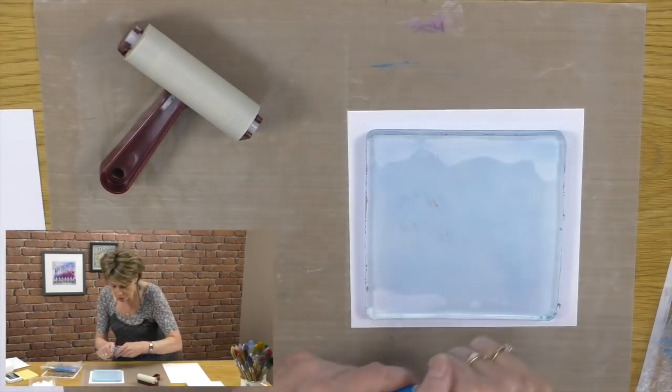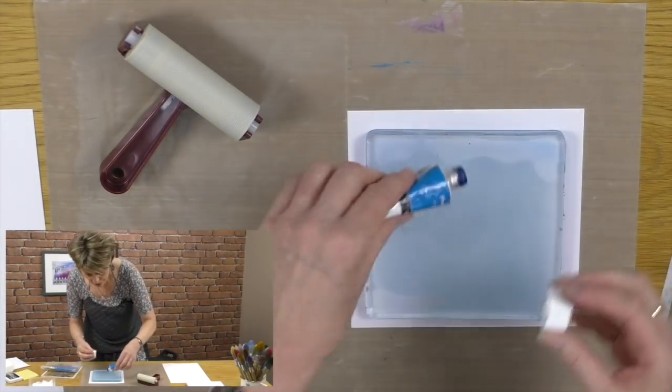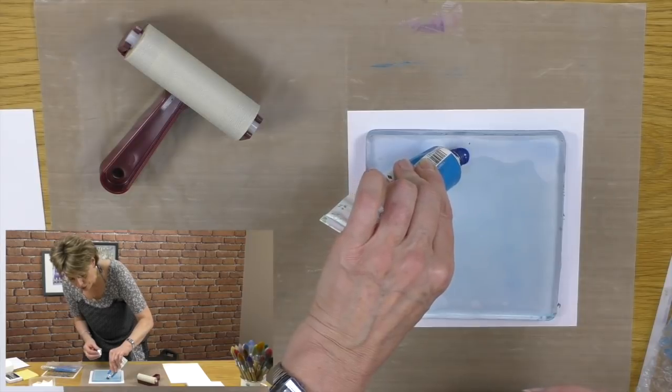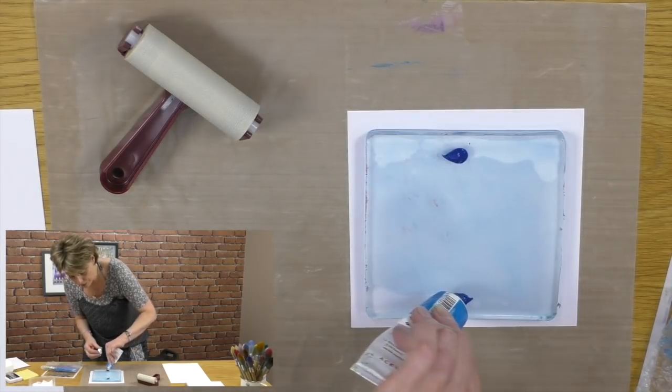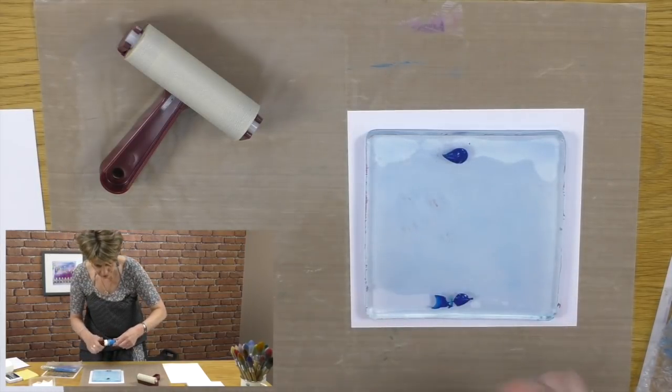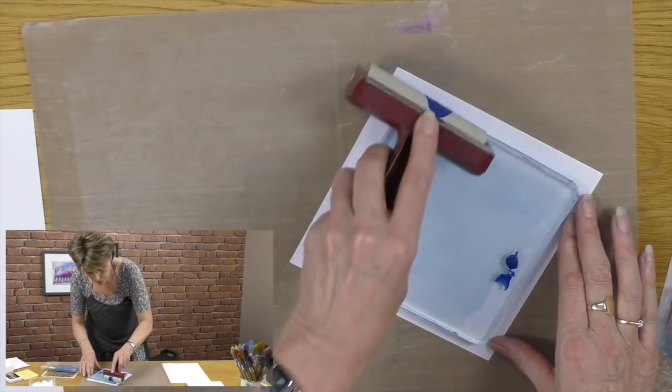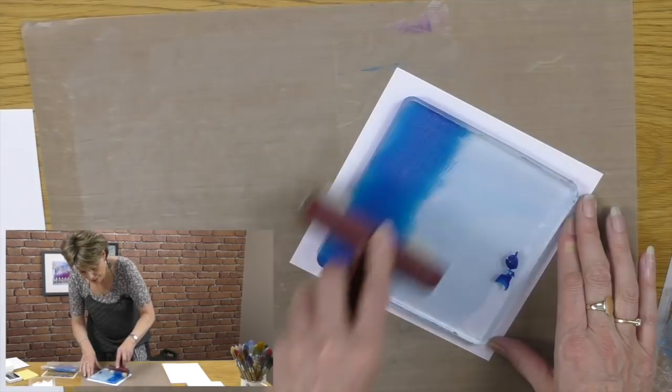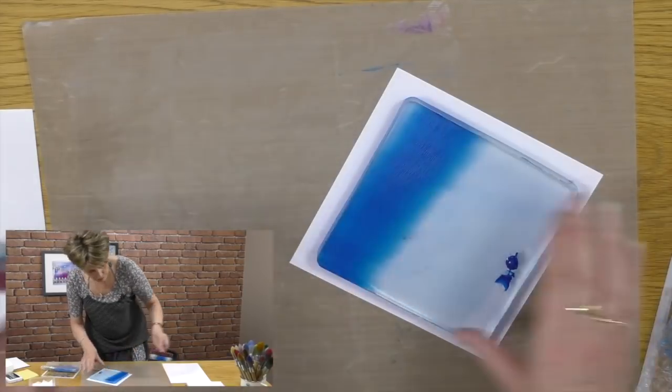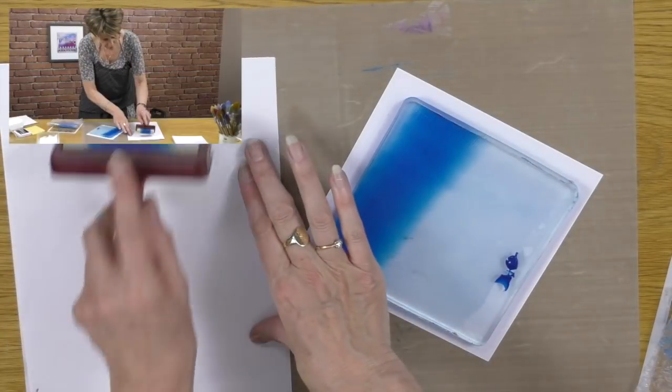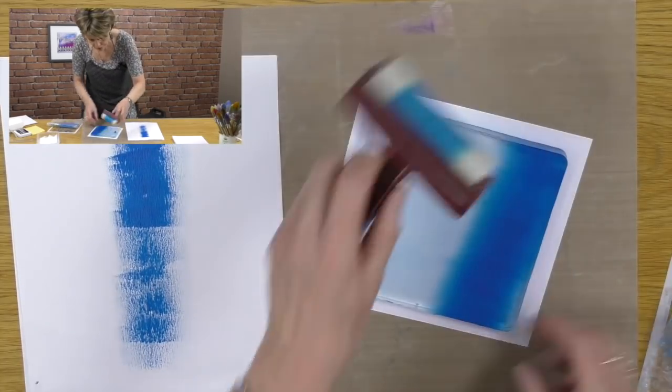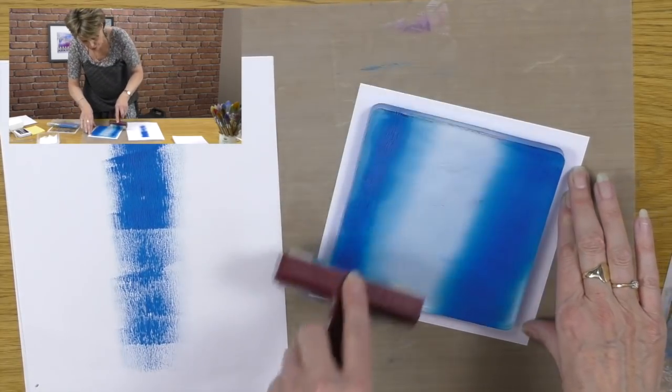First of all I'm going to use process magenta and I just want to put a tiny bit at the top and a tiny bit at the bottom, and then I'm going to use my brayer to just spread some paint there and get rid of some as well.